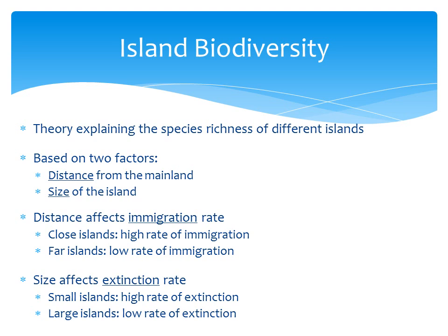The size of the island affects the extinction rate, or the rate at which species are lost from the island. Small islands tend to have a high rate of extinction, because there's a lot of competition for resources, and so more species are going to be unable to compete successfully and will go extinct. Large islands have more resources, and therefore have a lower rate of extinction. Species are more likely to survive on large islands.